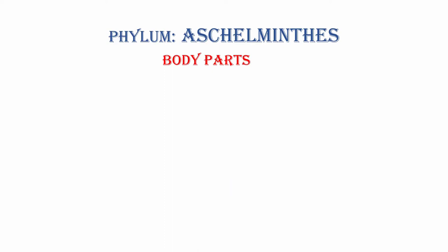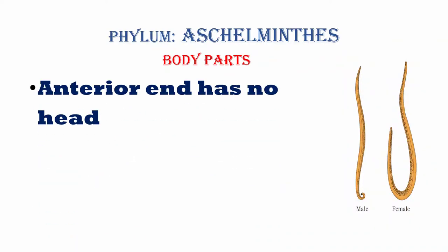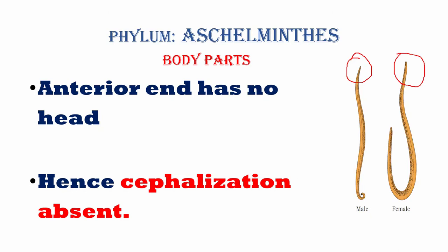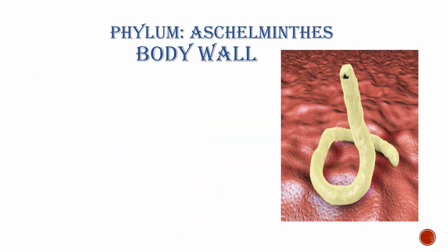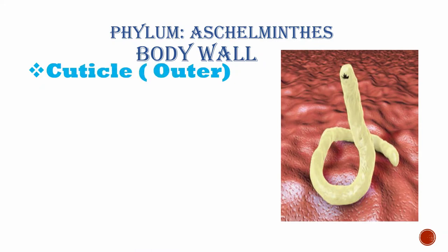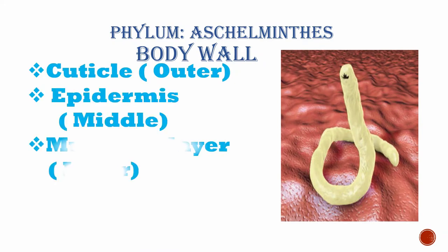Regarding body parts: the anterior end of Aschelminthes does not have a proper head-like structure. You can see this in both male and female Ascaris — the anterior end lacks a proper head, so cephalization (head formation) is absent. The body wall of Aschelminthes consists of three layers: the outer cuticle layer, the middle epidermis layer, and the inner muscular layer.